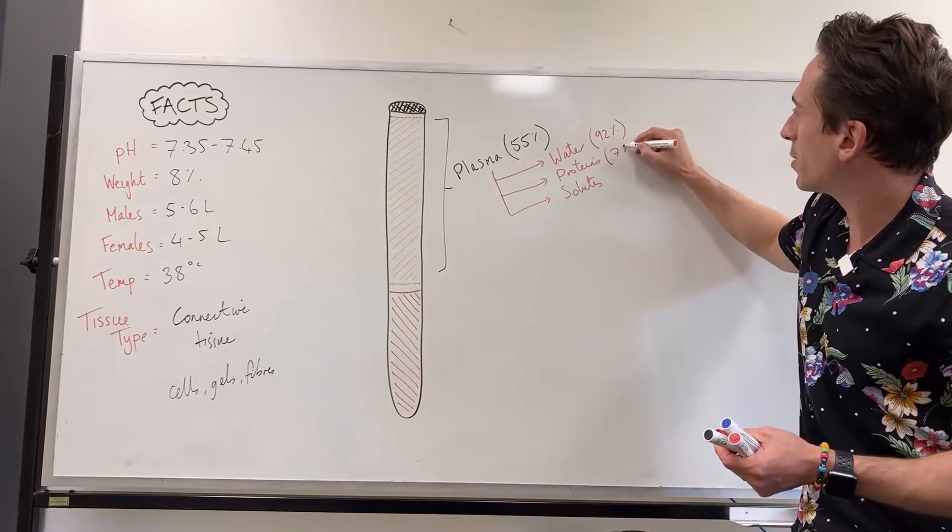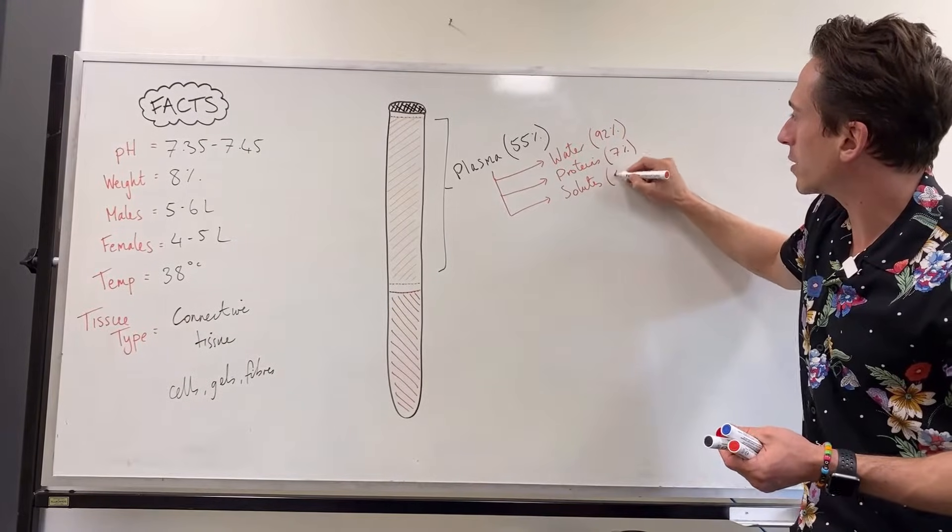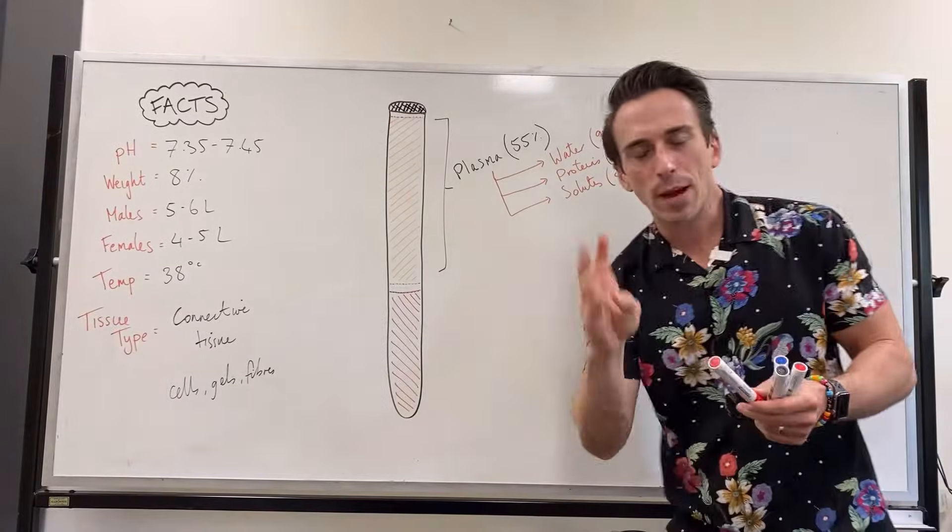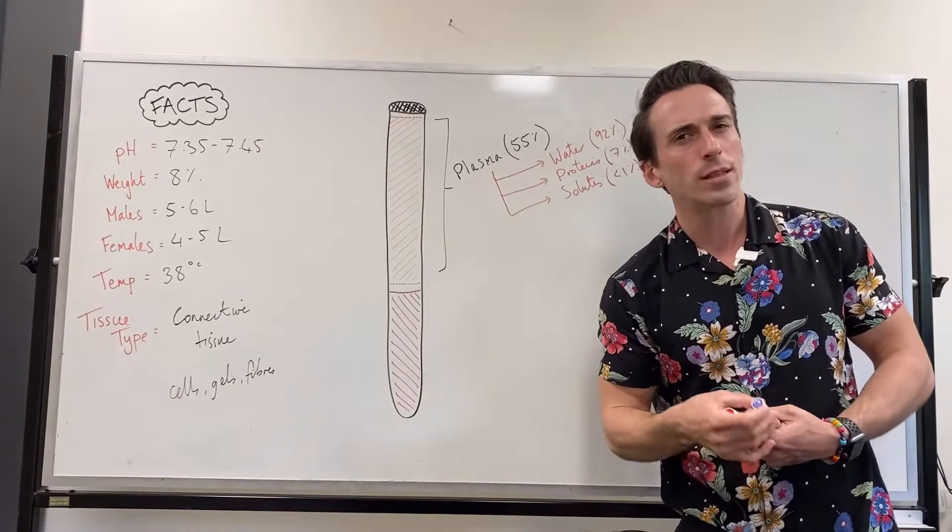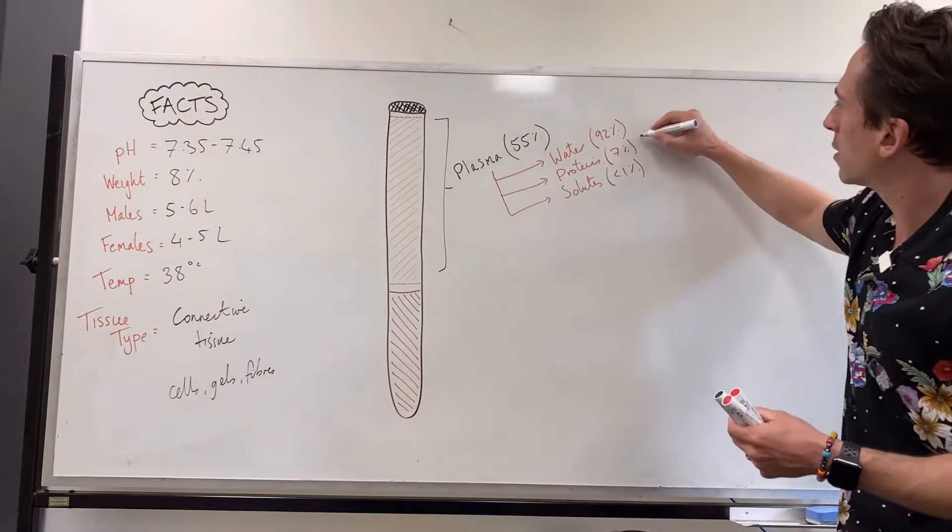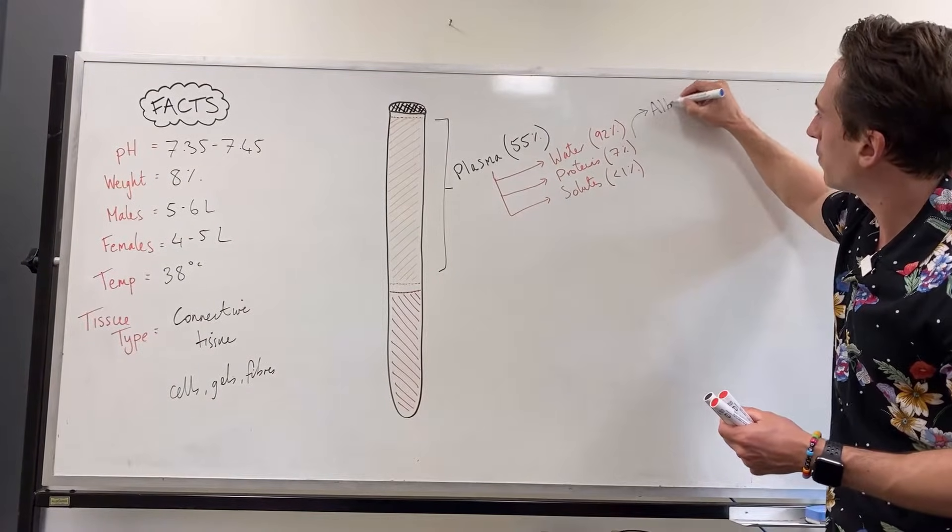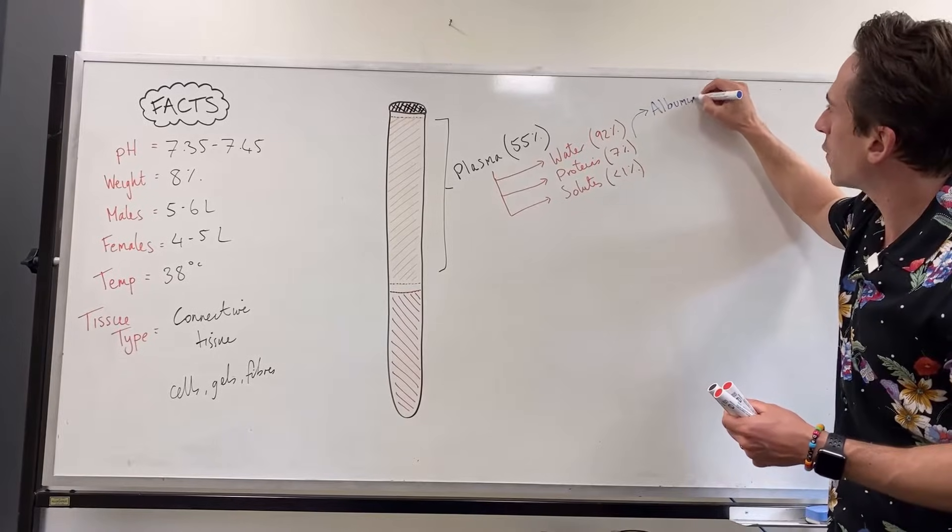So of this 55% you're going to find that 92% of plasma is water. So if most of the blood is plasma and most of the plasma is water, most of our blood is water. Proteins make up around about 7% and you're going to find that solutes is less than 1%. Now with the proteins, there's three main types of proteins in blood that you should know. There's obviously more, but there's three main that you should be aware of. So these three proteins are albumin.